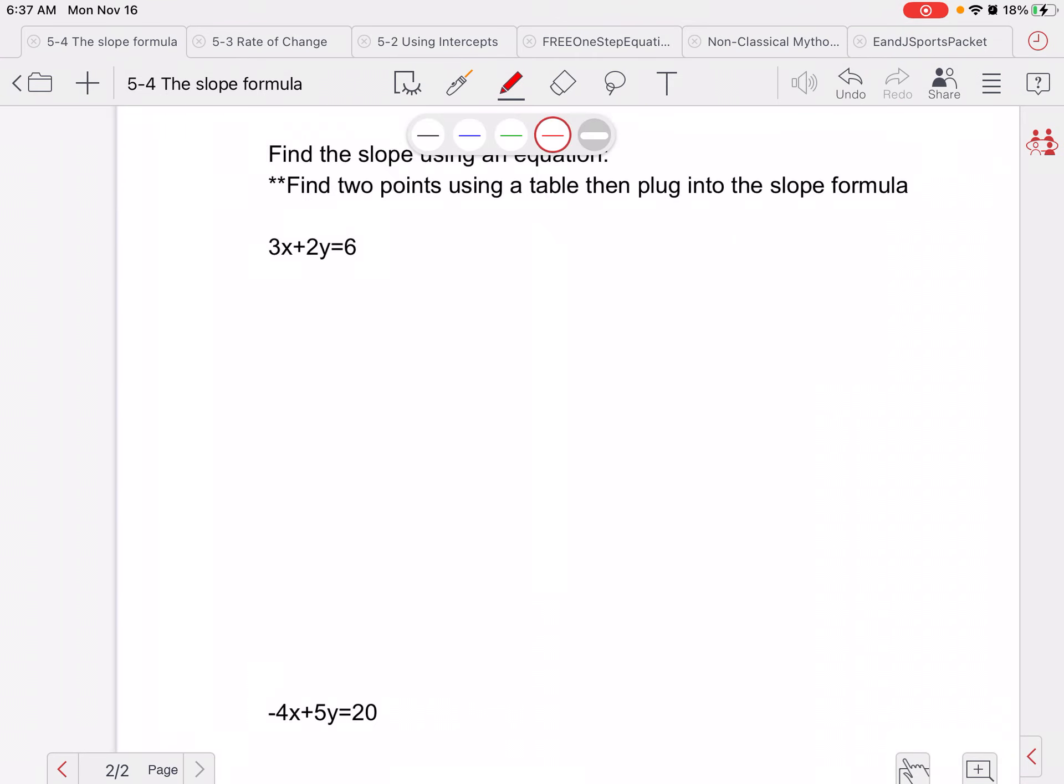Now we're going to find slope from an equation. When we want to find slope from an equation, we need to find two points. In this case, I like to find the intercepts just because zeros are easy to solve. But you could have picked a 1 for x or a 2 for x, whatever works for you. You just need two points in order to find the slope.